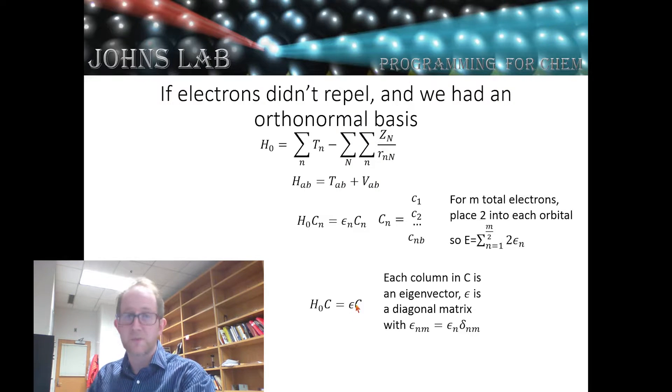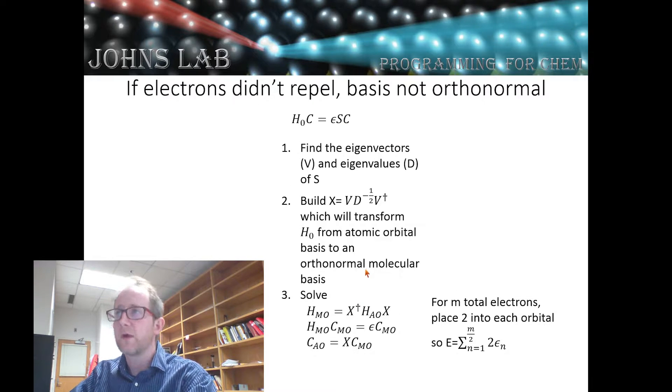And if we look at the nth diagonal element, it is the eigenvalue for the nth column of matrix C. Okay, so that's a compact way of writing this. This was very easy to solve. We just diagonalize H_0 or find the eigenvector for H_0 and then look at the eigenvalues and we're done. Of course, our basis set isn't orthonormal. If our basis set was orthonormal, then our S matrix or overlap matrix would be the identity matrix. And it's not.